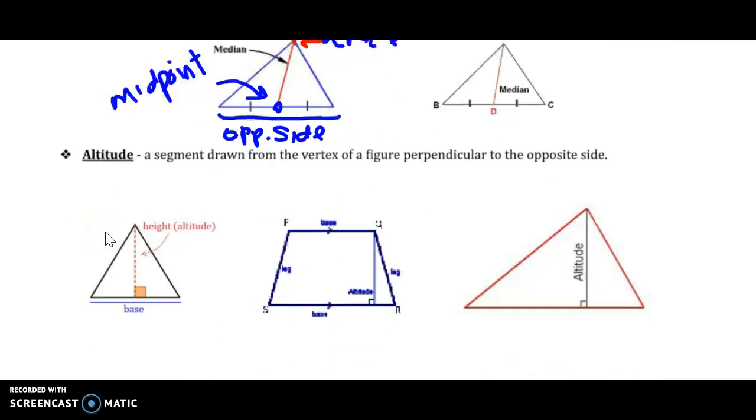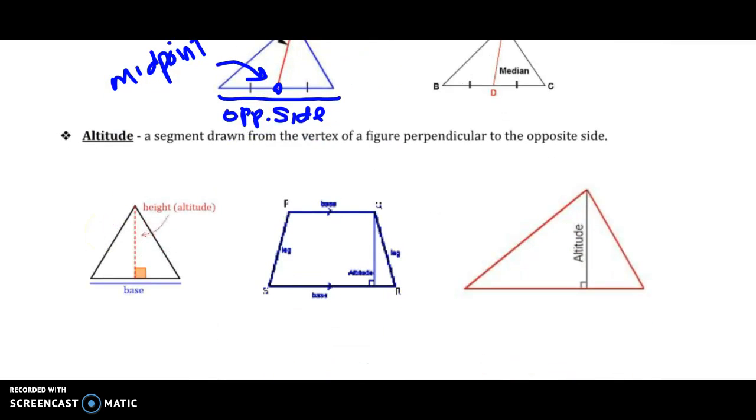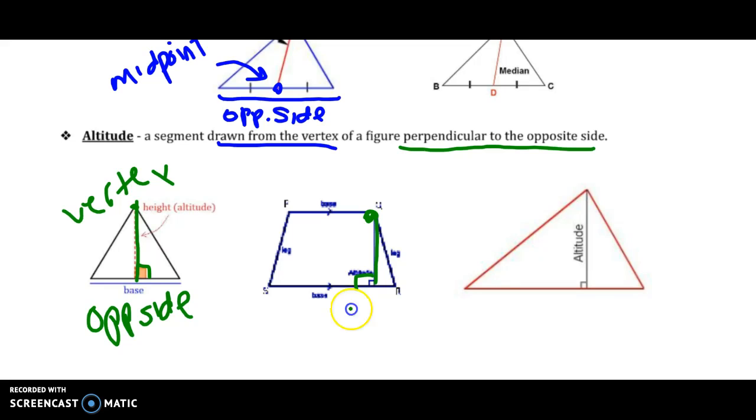Our last term that you'll create a vocabulary form for is an altitude, which is a segment drawn from the vertex perpendicular to the opposite side. So that's the key piece there, the perpendicular part. Here is our vertex, here is our altitude that is perpendicular to the opposite side. Again, here is our vertex, here is our altitude, again perpendicular to the opposite side.